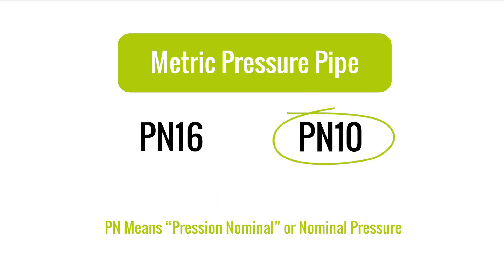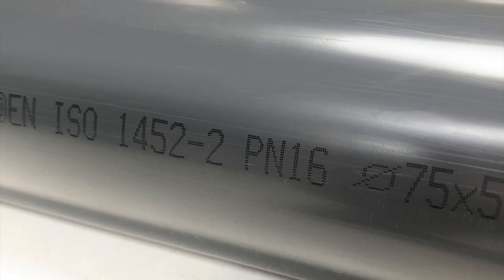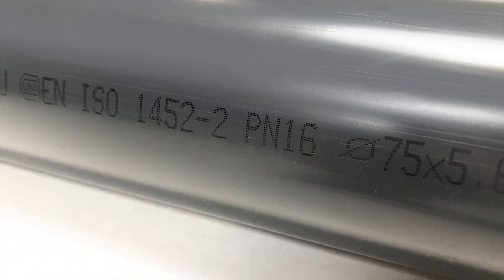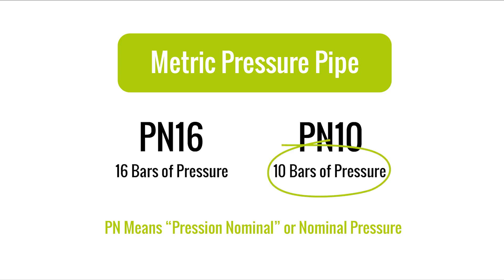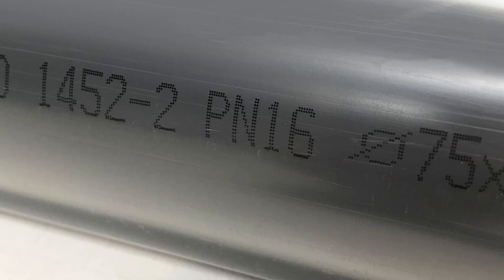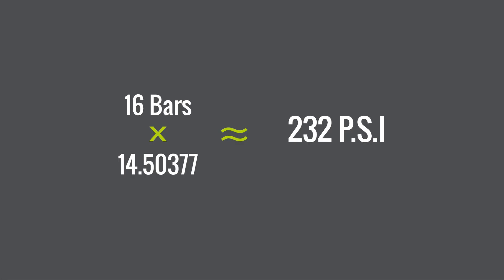Metric pressure pipe will be assigned a PN number, such as PN16. This PN number is a direct indication of the pressure rating in bars. So a PN16 pipe is rated for 16 bars of operating pressure, which converts to approximately 232 psi.